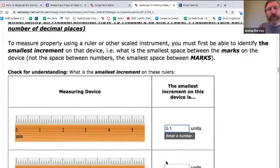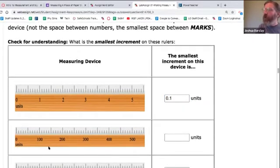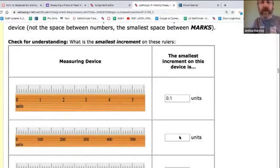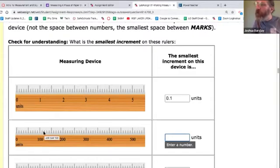What's the smallest increment on this one? If you said 10 units, you guys see here, this is 0, 100, 200. This tiny increment is just 10 units.